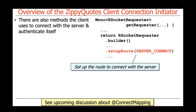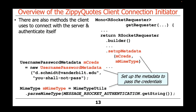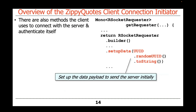We then set up how we're going to contact the handle connect endpoint on the server. To do that, we set up the route to talk to the server's connect endpoint, which is the handle connect method. We then set up the metadata credentials, which include the username and password and the MIME type. And then we set up the data payload — this just states what the name of the client is for registering on the back end, sent as a random UUID string.